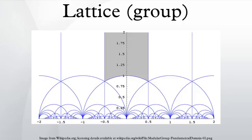Lattices in complex space: a lattice in ℂⁿ is a discrete subgroup which spans the 2n-dimensional real vector space. For example, the Gaussian integers form a lattice in ℂ. Every lattice in ℝⁿ is a free abelian group of rank n. Every lattice in ℂⁿ is a free abelian group of rank 2n.